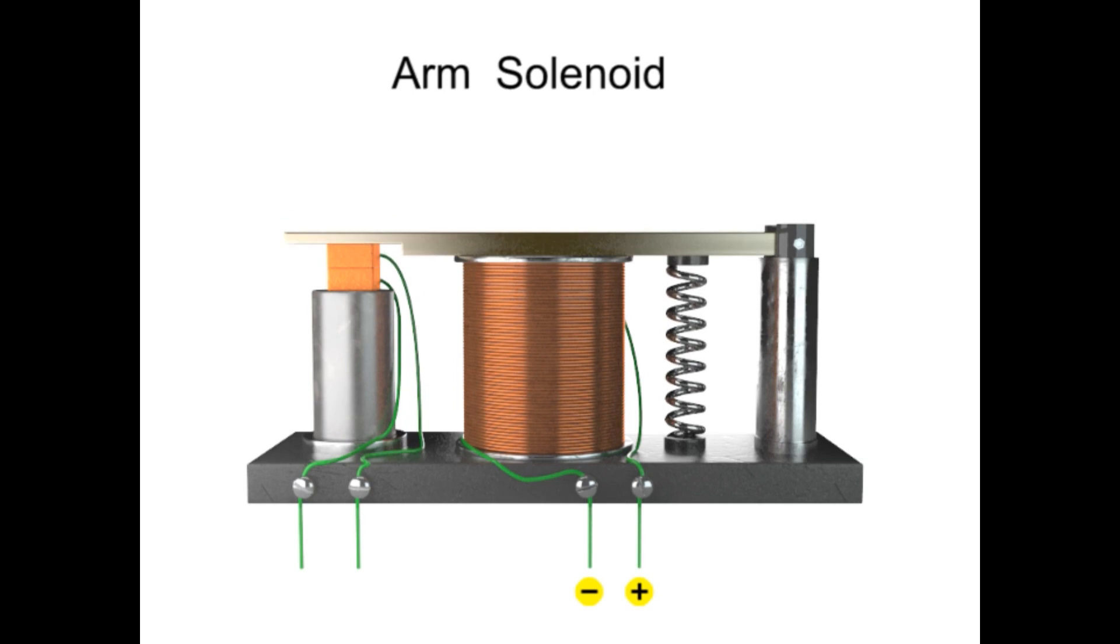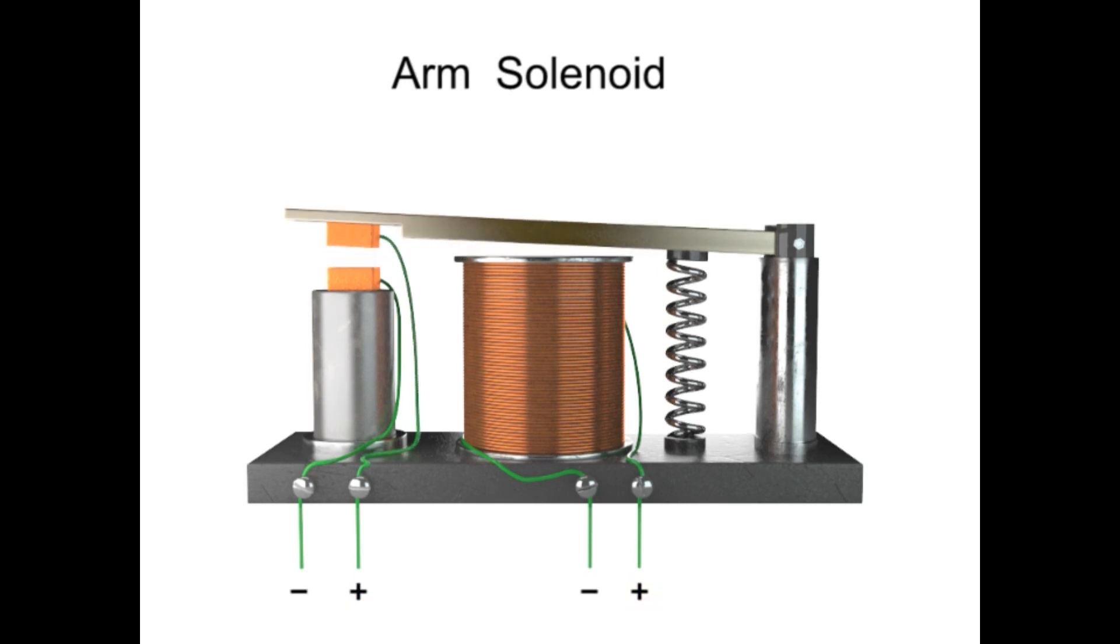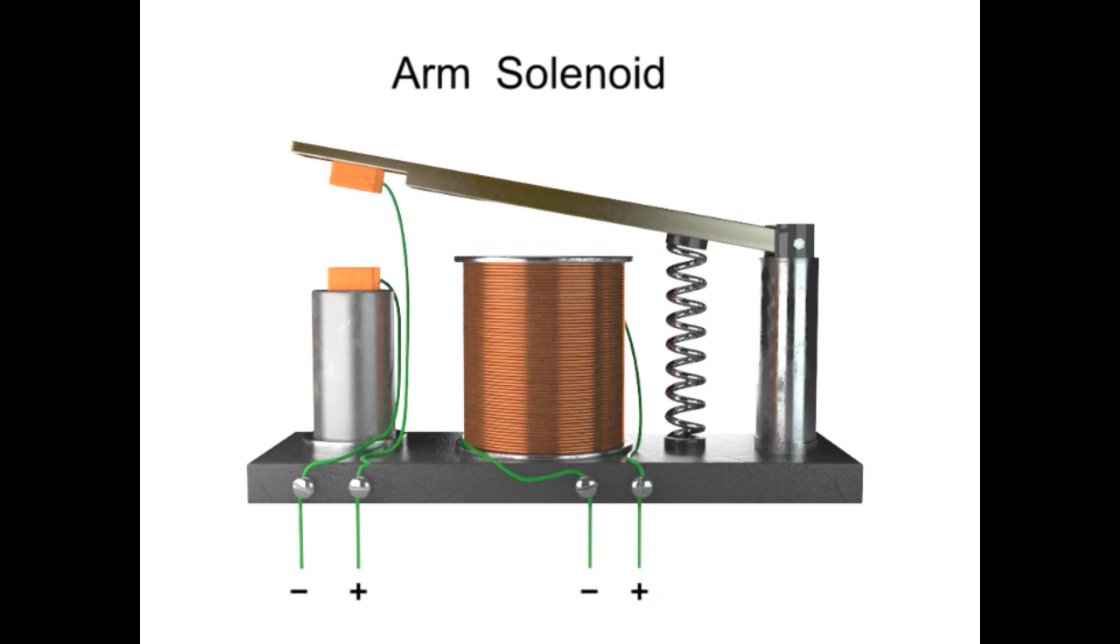Thus, the movable contact makes a connection with a fixed contact to close the switch and energize a secondary circuit. When the electrical current to the solenoid is turned off, the magnetic field disappears, and the contact is broken as the spring returns to its resting position.